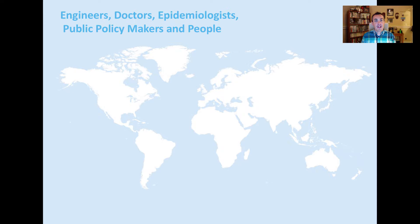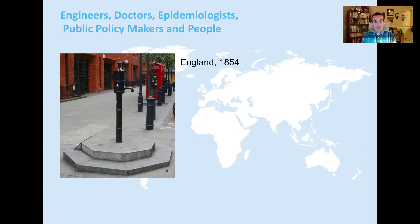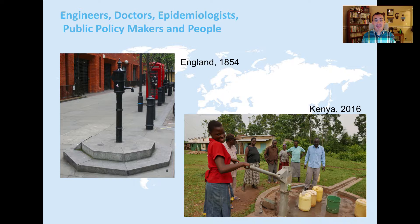He developed the theory that cholera was being transmitted through the water supply. This is the Broad Street pump — it's still there, and you can see it doesn't have a handle. That was his intervention: he removed the handle, and cholera disappeared from the neighborhood. In one fell swoop, he invented epidemiology, proved the concept of waterborne disease, and helped create modern germ theory. This is England in 1854, and this is Kenya in 2016 — we work in almost precisely the same field.